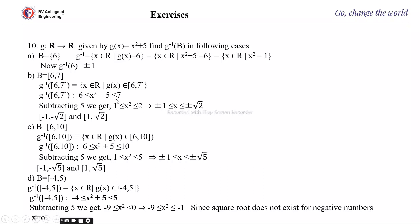From 1 ≤ x², we get x ≤ -1 or x ≥ 1, i.e., |x| ≥ 1. From x² ≤ 2, taking the square root gives |x| ≤ √2. Therefore the range of x values will be [-√2, -1] union [1, √2].